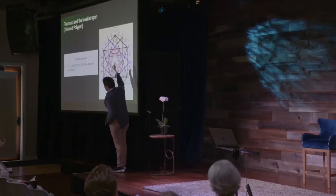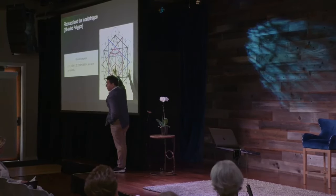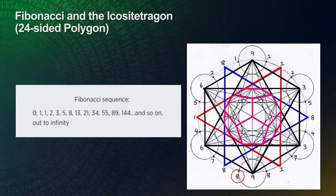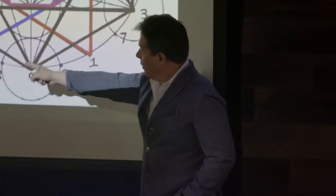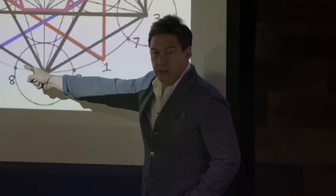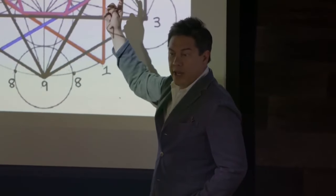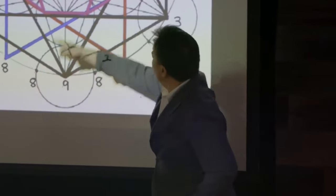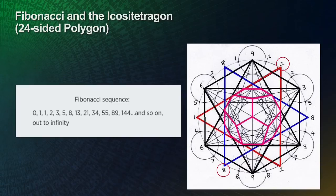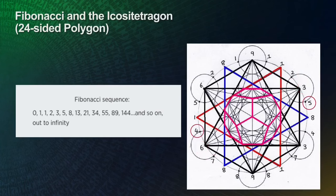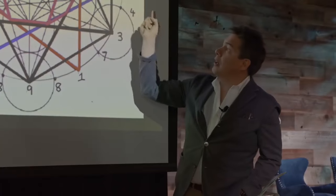Look what happens with its 180-degree opposite number. What's the opposite number? 1. 1 plus 8 equals 9. What about the next one? The next one is 8, the next one is 1. 9, 7, 2, 9, 6, 3, 9, 4, 5, 9, 1, 8, 9.